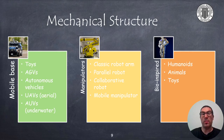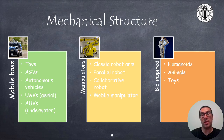Robots have different mechanical structures. There are some that have the appearance of a vehicle with a mobile base, such as robotic toys, AGVs — that is, autonomous guided vehicles — autonomous vehicles, UAVs or AUVs, which are aerial and underwater robots. These types of robots have the main characteristic that they have the ability to move in a specific environment.